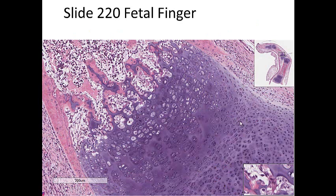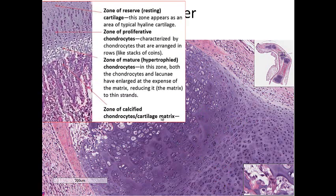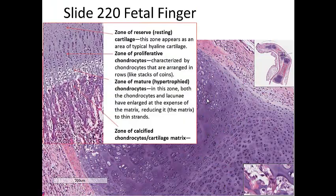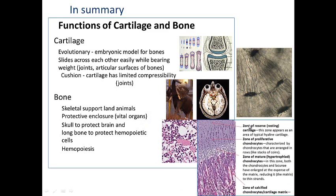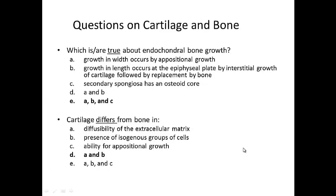Primary spongiosa has cartilage in the core; secondary spongiosa has osteoid in its core. In all these different regions there is proliferation by interstitial growth of cartilage, then alignment of cells, then hypertrophy, then calcification, then replacement — just a cycle that repeats at the epiphyseal plate and in the transfer of your cartilage skeleton to your bones. The function of cartilage and bone in summary: in the embryo we had a cartilage skeleton; some sharks only have a cartilage skeleton. To walk on land with that weight, you need bones to keep your shape.